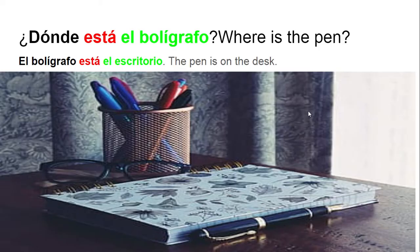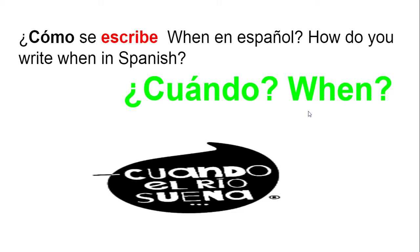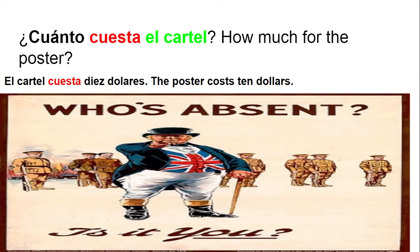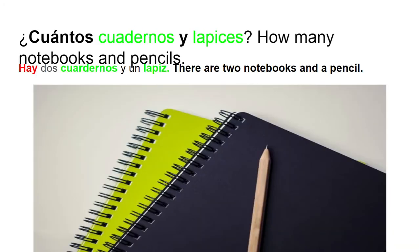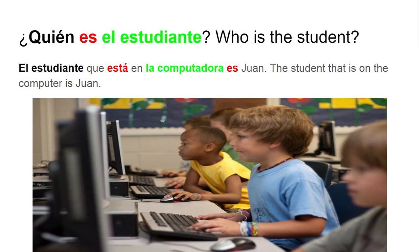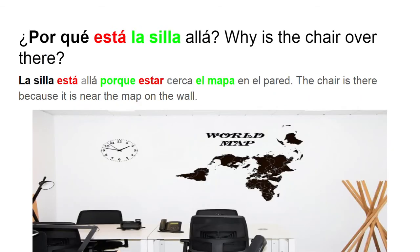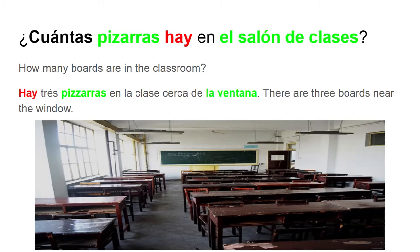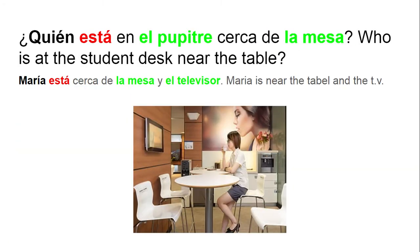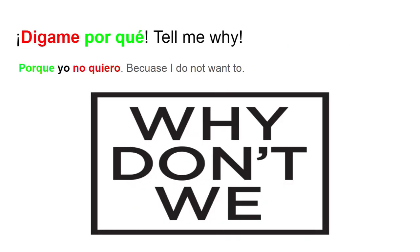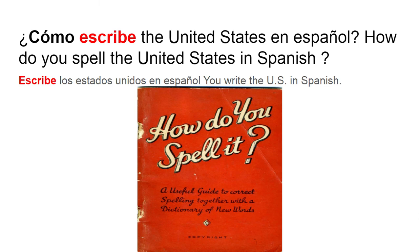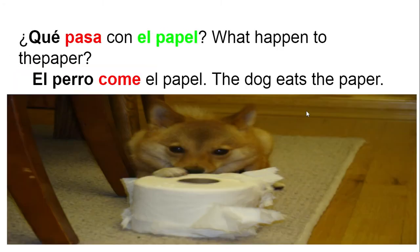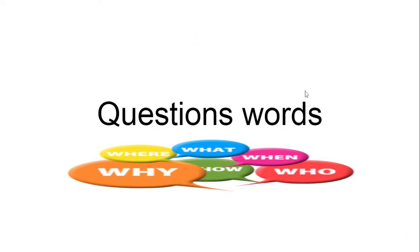Question words review: ¿Dónde? means where. ¿Cómo? means how or what. ¿Cuánto? means how much. ¿Cuándo? means when. ¿Cuántos/Cuántas? means how many. ¿Qué? means what. ¿Quién? is who. ¿Por qué? is why. Porque (together) means because. And there you have it. Thank you.